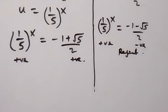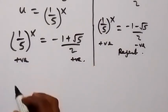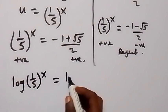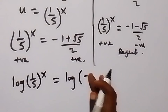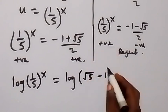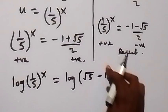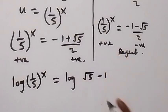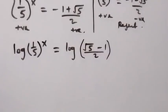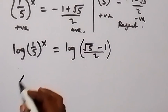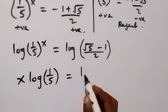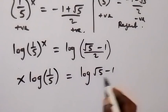Working with the valid solution, we take the log of both sides: log of (1 over 5) raised to the power x equals log of (root 5 minus 1) over 2. From the law of logarithms, we bring the power down: x times log(1 over 5) equals log of (root 5 minus 1) over 2.